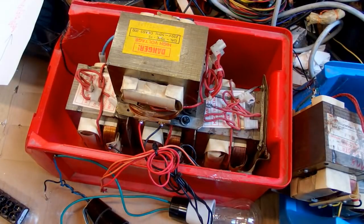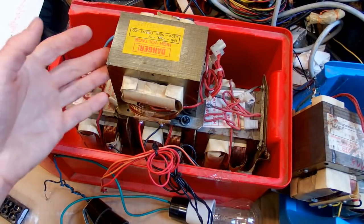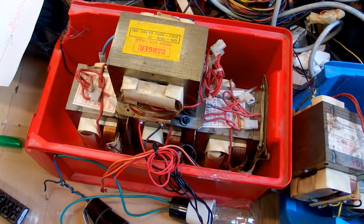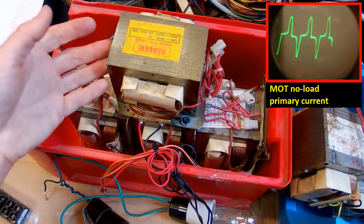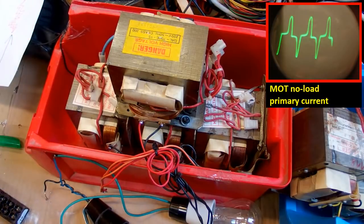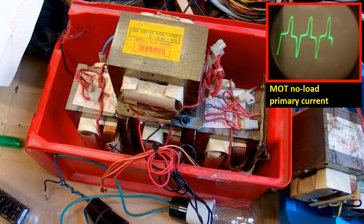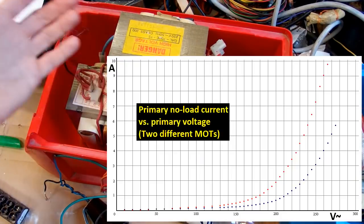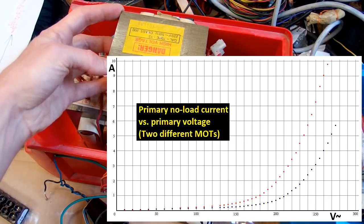Microwave oven transformers are designed quite cheaply. To make them smaller and easier to transport, they use a smaller core which means the iron core runs very close to saturation. Those transformers draw a very high current even with no load, and they also have a very high inrush current. For those reasons it's better to run them at a slightly lower voltage.